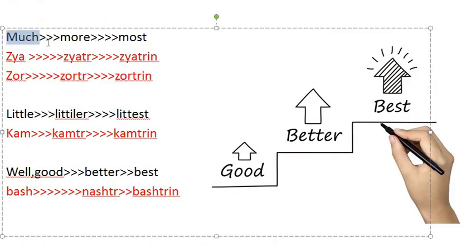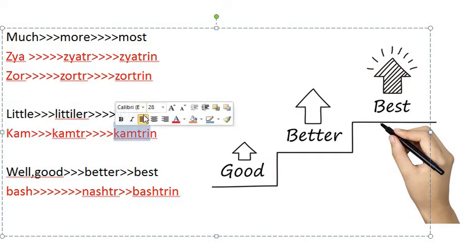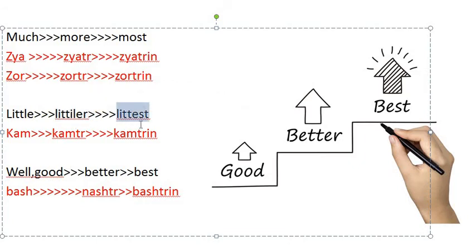Some key adjectives worth noting: 'much/many' — 'zia' (comparative: 'ziatir,' superlative: 'ziatirin'); also 'zor' (comparative: 'zorter,' superlative: 'zorterin'). 'Little' — 'kam' (comparative: 'kamter,' superlative: 'kamterin'), which also translates as 'less/least.' 'Well/good' — 'bash' (comparative: 'bashtir,' superlative: 'bashtirin').